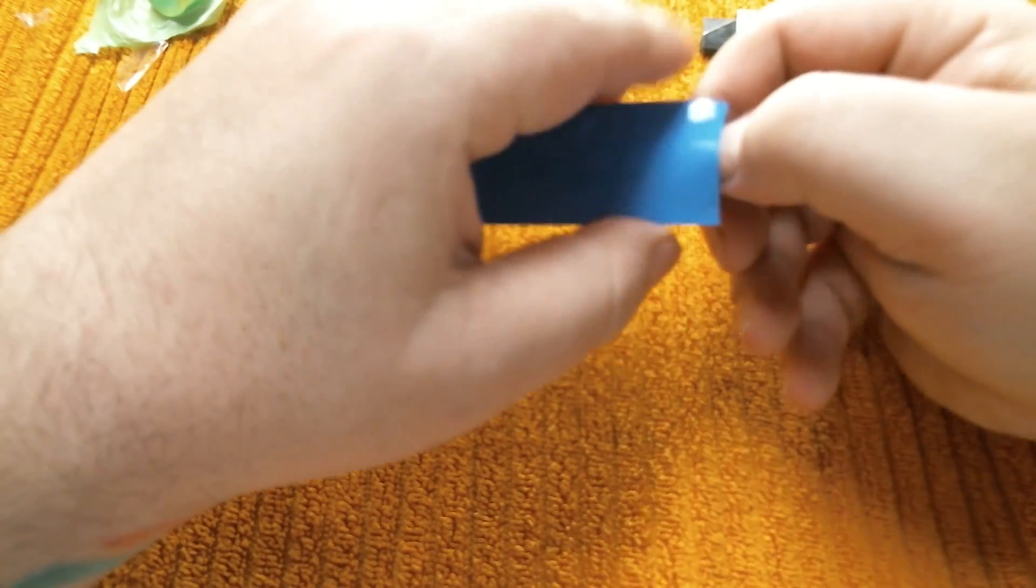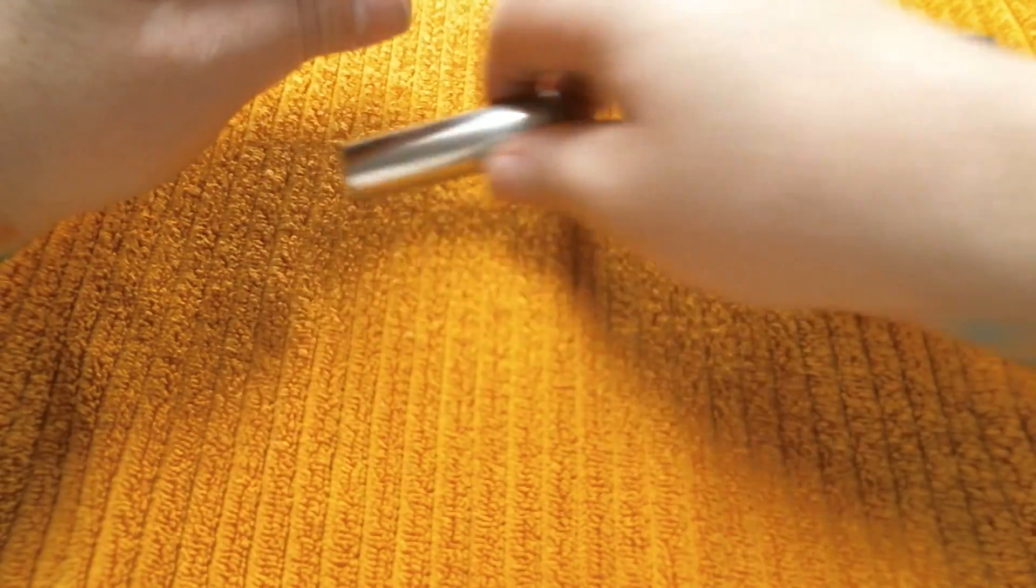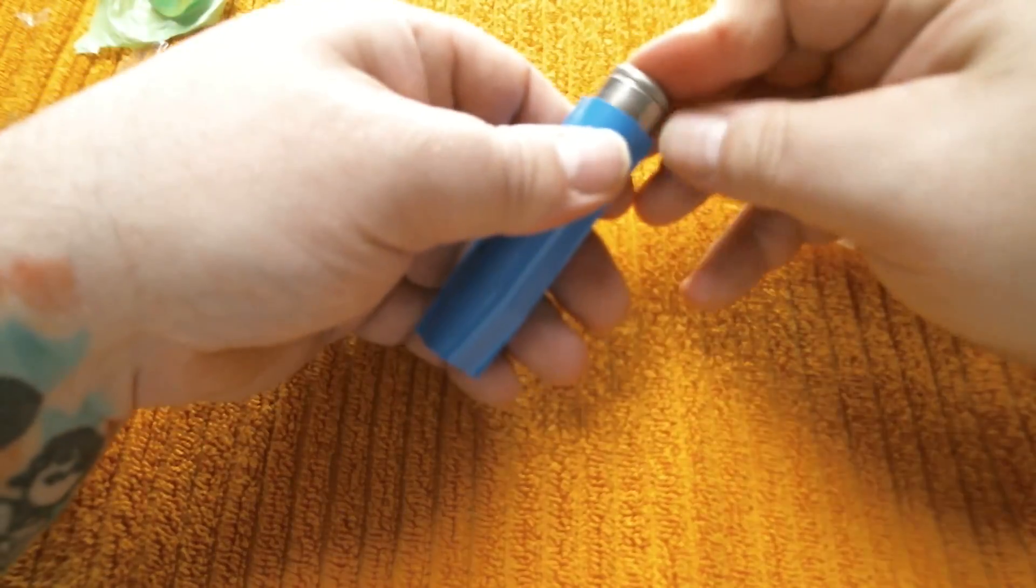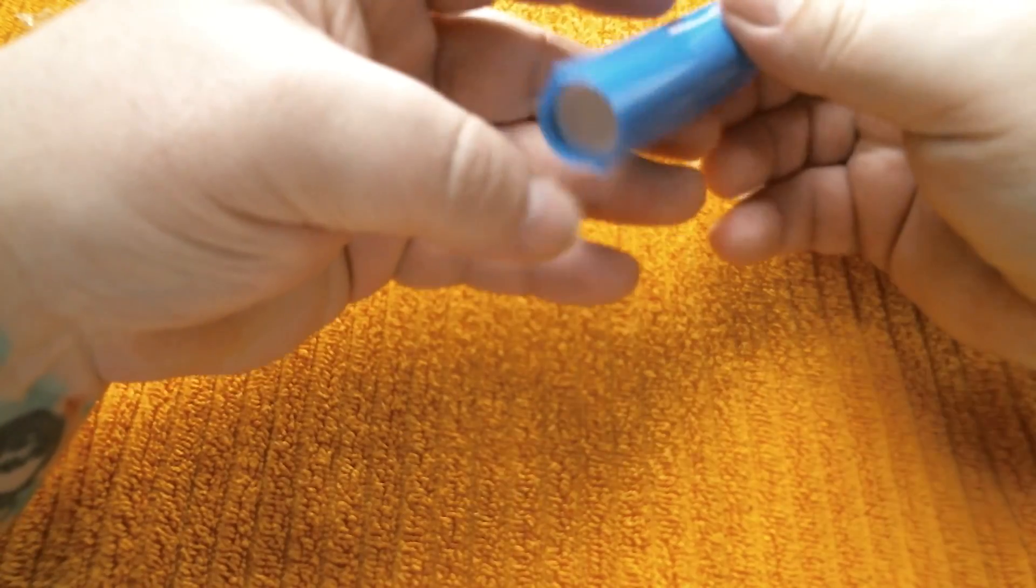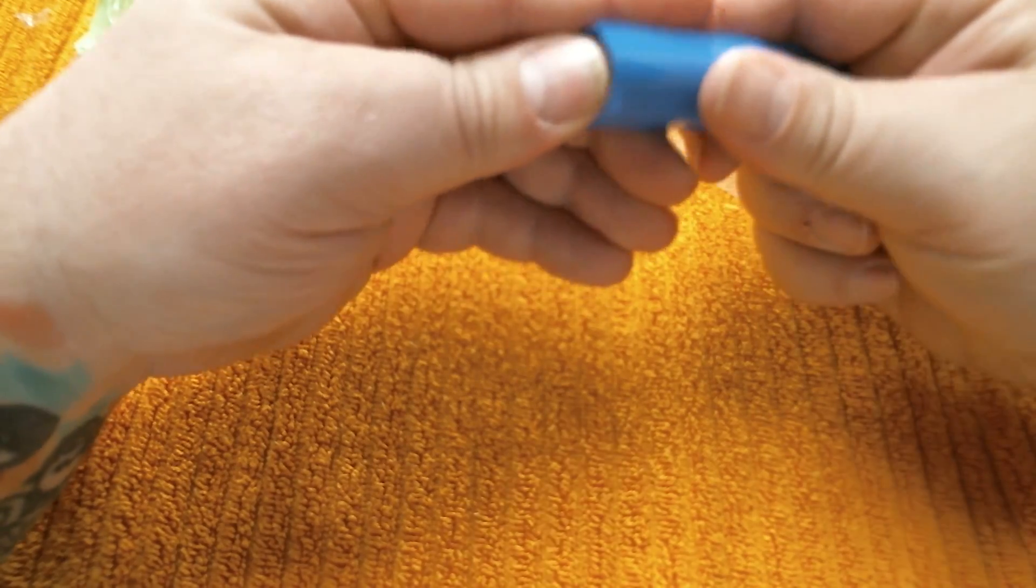If you've ever used heat shrink on like a wire or something, this is exactly the same idea. Slide that on there, get that battery nice and centered inside the wrap.